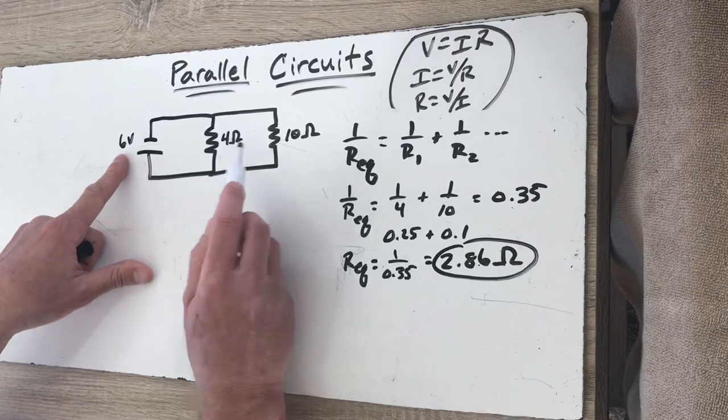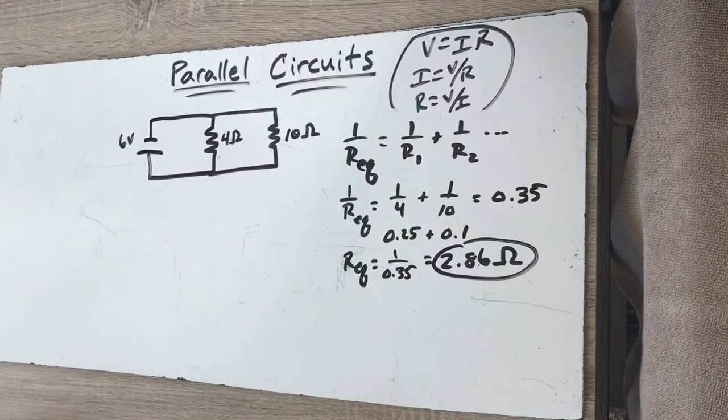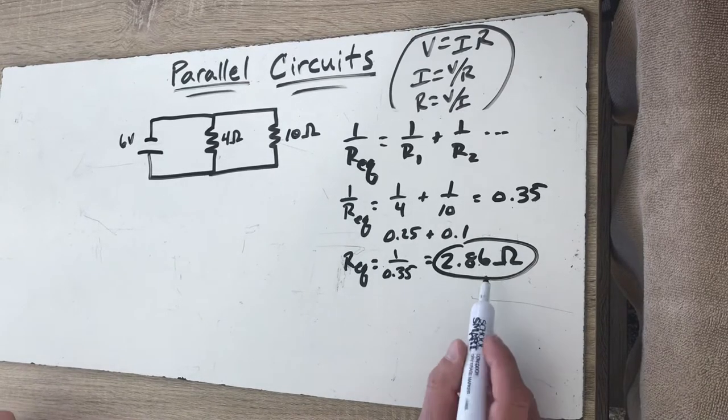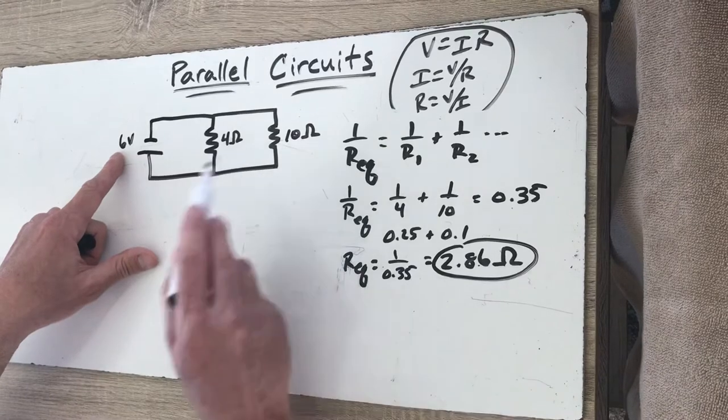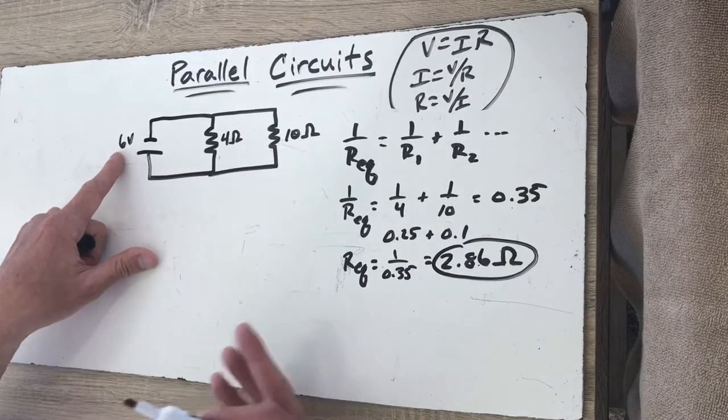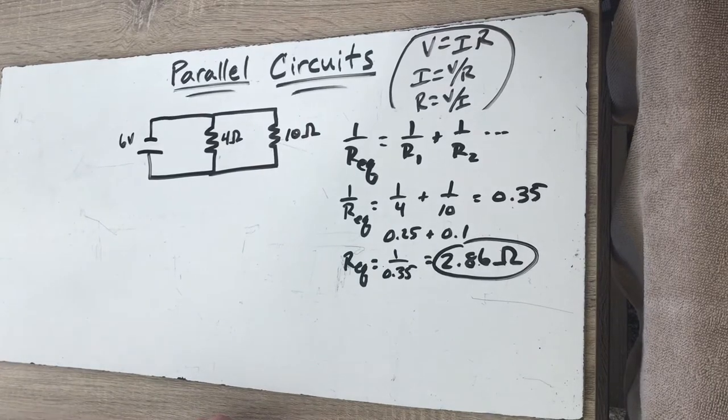You say, well how can that be when we have so much more resistance in each of those pathways? But it's by adding the pathways that we get this effect. So this is the overall resistance that that battery sees, much less than the 4 and the 10. Surprising how much of an effect you can have on this and it has very distinct advantages and then also some disadvantages.